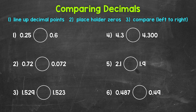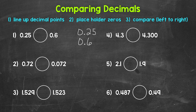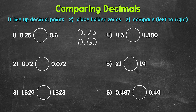We have to compare the place values. So first, what we need to do is line up the decimal points. So we have 25 hundredths and 6 tenths. Lining up the decimal points lines up all of the places. We can use placeholder zeros — zeros to the right of decimal digits do not change the value of the decimal, so they give us an equivalent decimal. Since 25 hundredths goes to the hundredths place, let's use a placeholder zero so this decimal goes to the hundredths place as well.